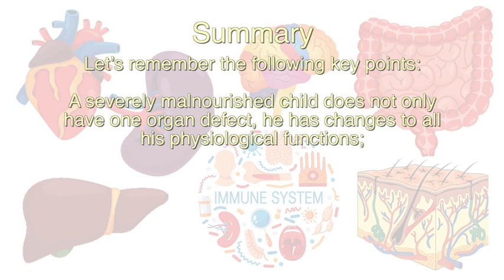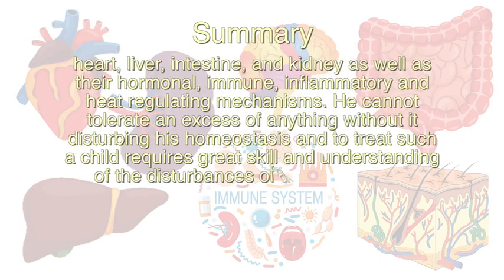In summary, a severely malnourished child does not only have one organ defect — he has changes to all his physiological functions: heart, liver, intestine, and kidney, as well as their hormonal, immune, inflammatory, and heat-regulating mechanisms. He cannot tolerate excess of anything without disturbing his homeostasis, and to treat such a child requires great skill and understanding of the disturbances of all the systems.